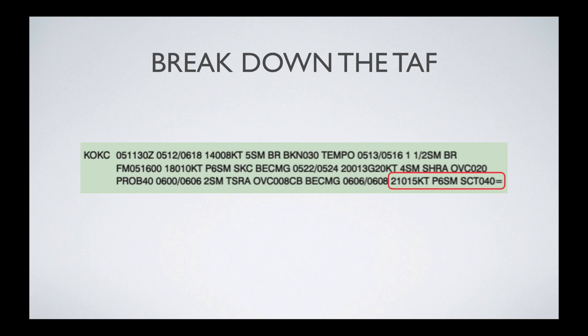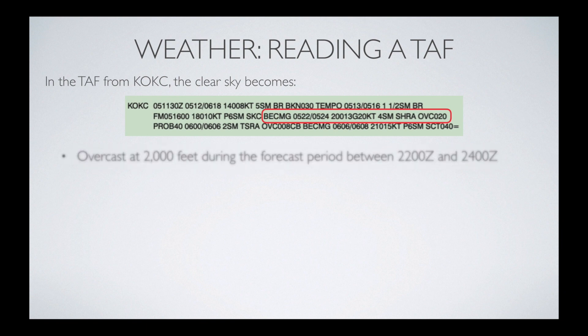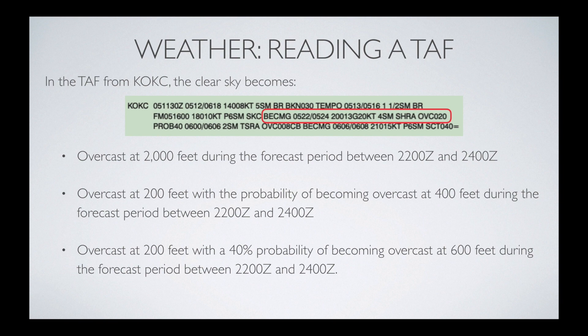Now we're going to go back to the question. All three answers dealt with the 2200 Zulu to 2400 Zulu period, so I've circled the portion of the TAF that deals with that time. Where it says 'becoming 0522,' that means becoming starting on the 5th at 2200 Zulu to the 5th at 2400 Zulu — exactly the period we're looking at. We're going to start at the bottom and use a process of elimination.